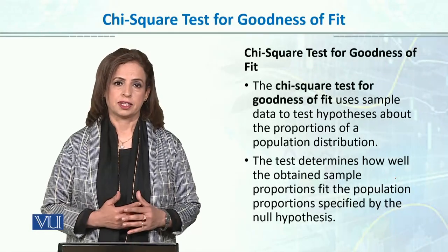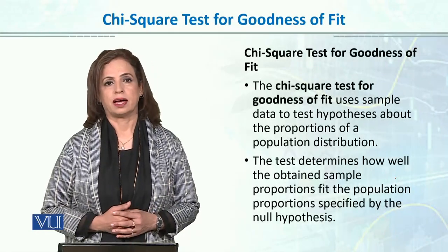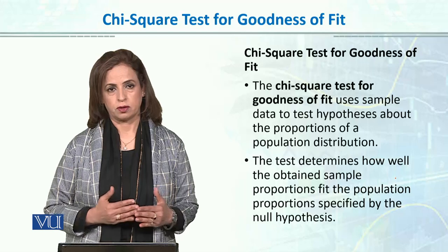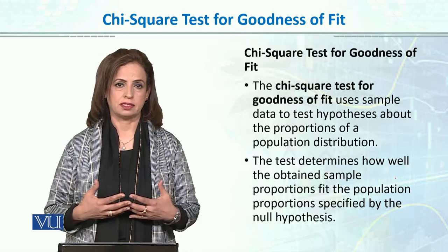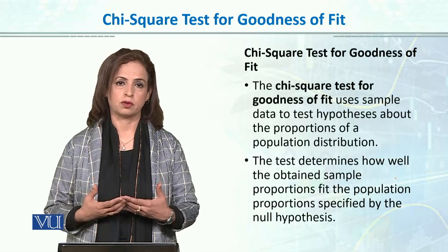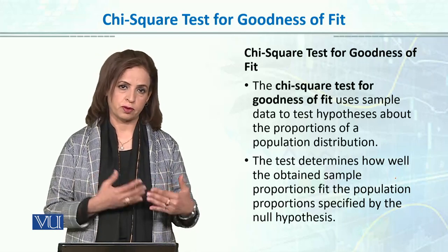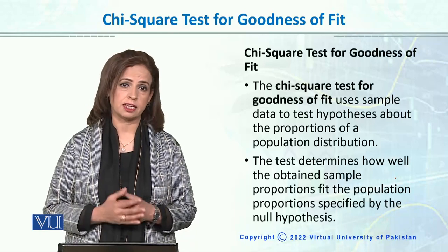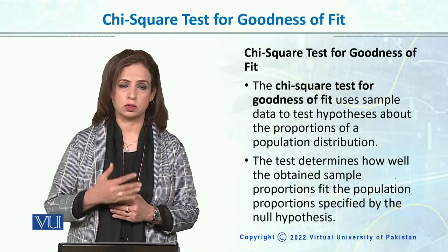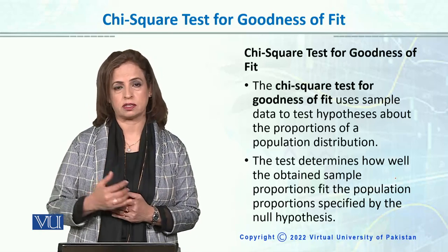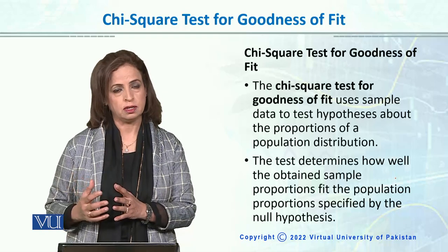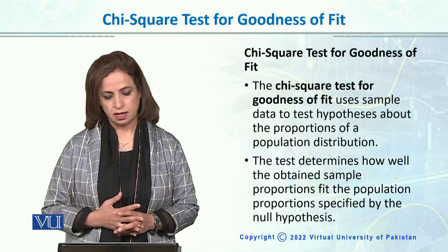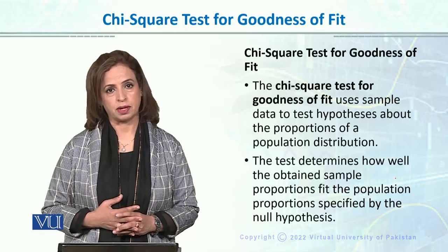The first type of chi-square test we will talk about is goodness of fit. Goodness of fit means that we have drawn a sample with frequencies in different categories, and then we test how well those frequencies correspond or fit to the population distribution which we have obtained.